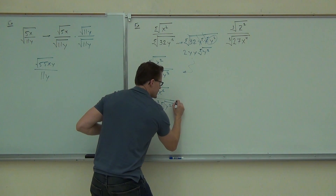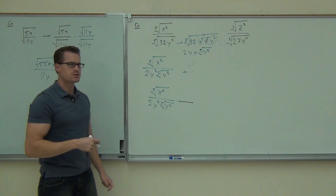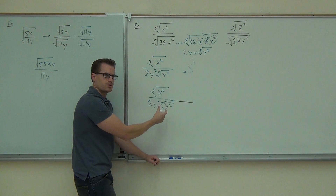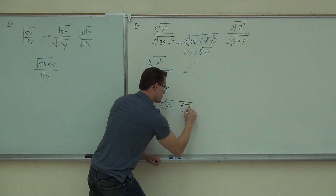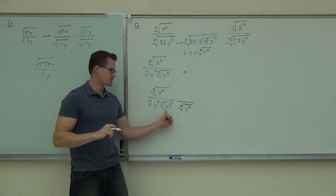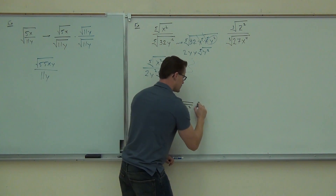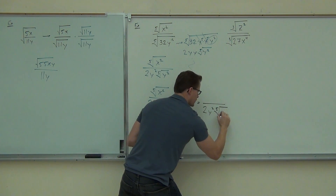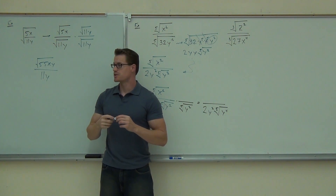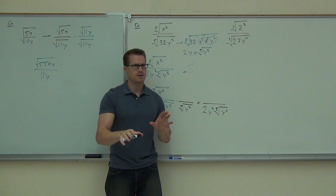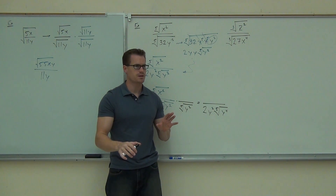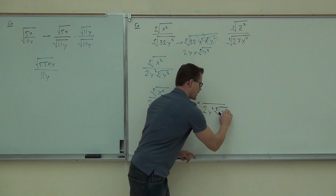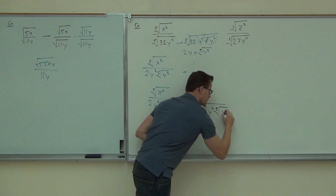So if I'm going to rationalize the denominator here, it means I need to multiply appropriately. I need you to notice that I don't need to multiply by the 2y squared at all — it's not in a root, so we're going to leave it alone. But if I multiply by the 5th root of y squared, just like this, what's that going to give you? You'd still have 2y squared, and inside the radical you'd have a 5th root of y to the 4th. Is that going to simplify? No.